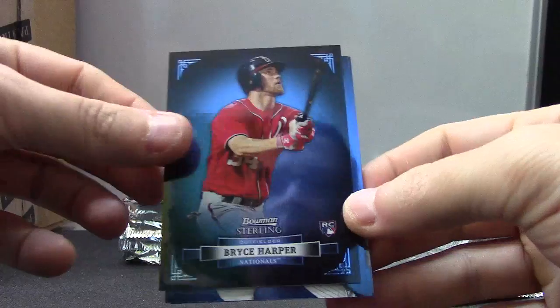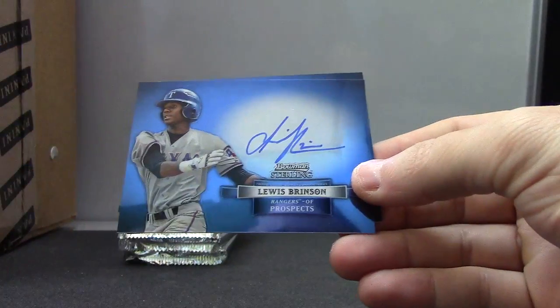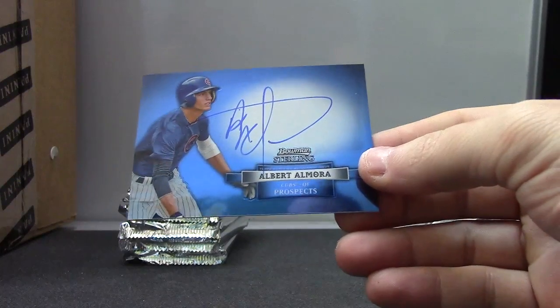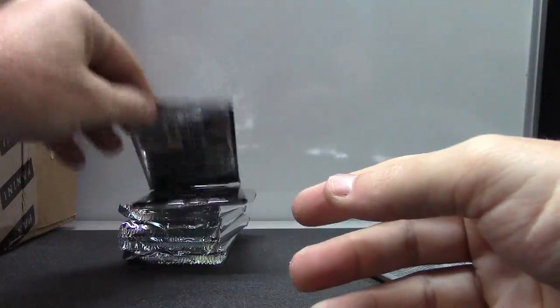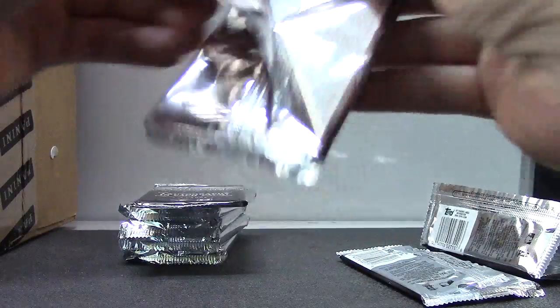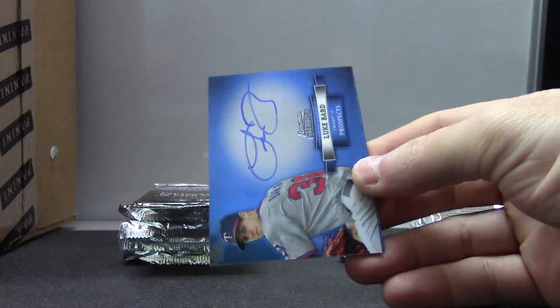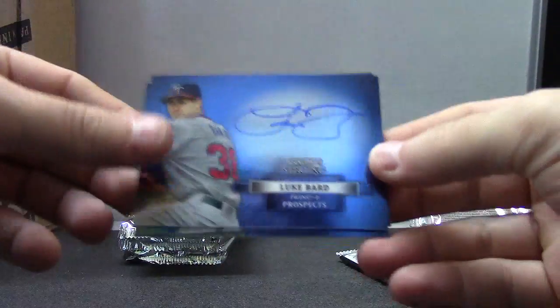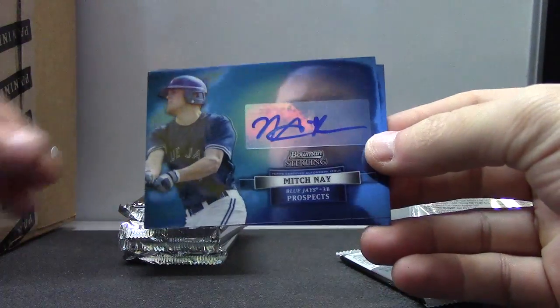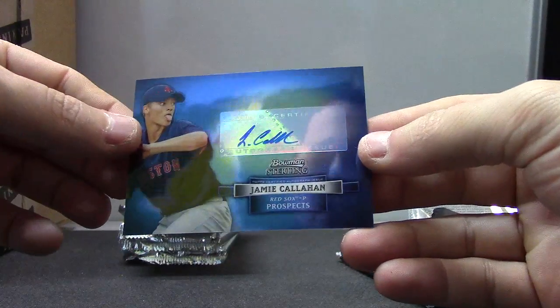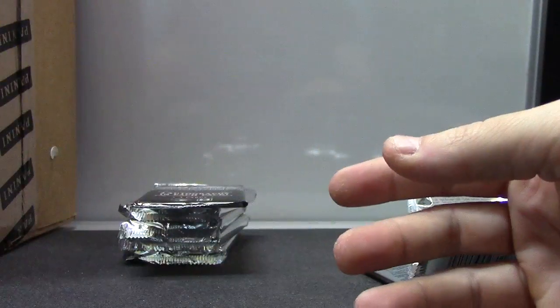Bryce Brentz rookie, Ty Hensley, Lewis Brinson, Albert Almora. AJ Griffin, AJ Griffin 199. Luke Bard, Mitch Nay, Jamie Callahan sticking his tongue out at everybody.